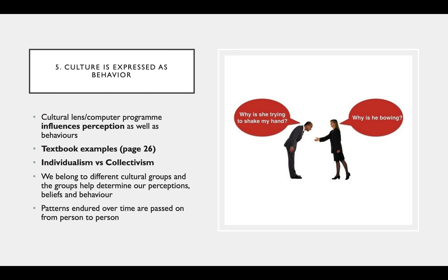Culture is expressed as behavior and influences your perception. On page 26, we again have Marcus, who was born into individualism — from communication science 1A — where he was expected to be independent, with an 'I' identity, making his own decisions about marriage and dating. Whereas Patience was born into collectivism, where family members must be taken into consideration in those marriage decisions. This affects how we behave and how we see the world through our cultural lens.